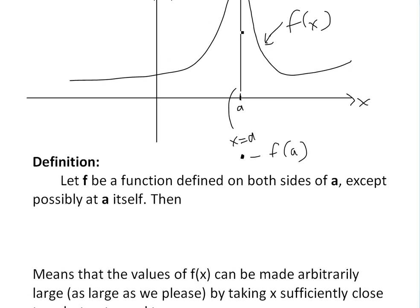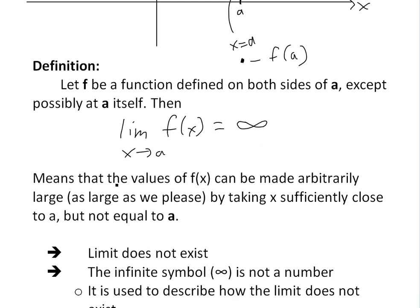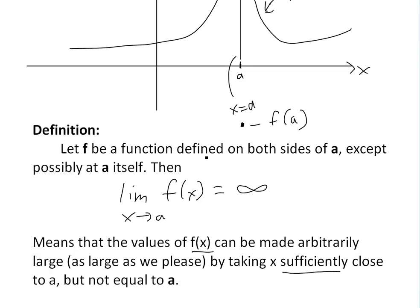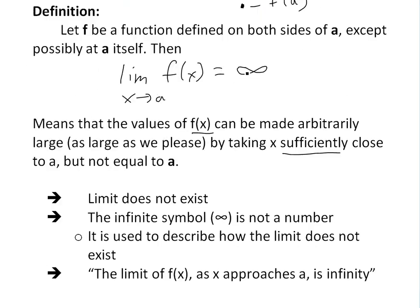If this exists, it doesn't really affect the limit because it's still approaching infinity. We would write it as limit as x approaches a of f(x) is equal to infinity. This means that the values of f(x) can be made arbitrarily large, or as large as we please, simply by taking x sufficiently close to a but not equal to a. We just make it closer and closer to a, and we'll just get larger and larger.